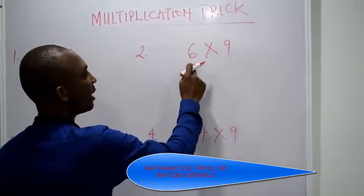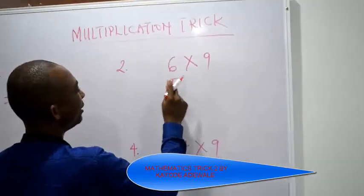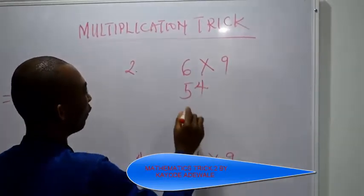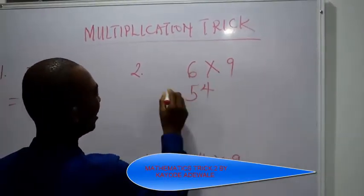Number 2, take 1 away from 6, that's 5. Difference between 5 and 9, that is 4. So 6 multiplied by 9 is equal to 54.